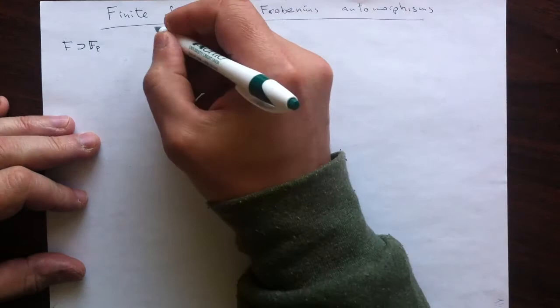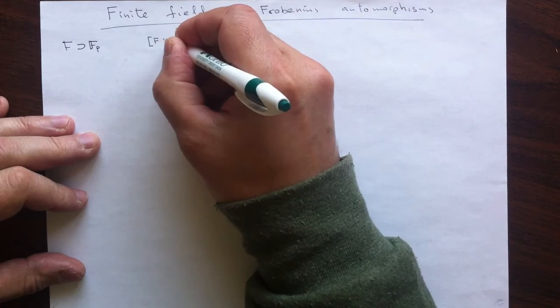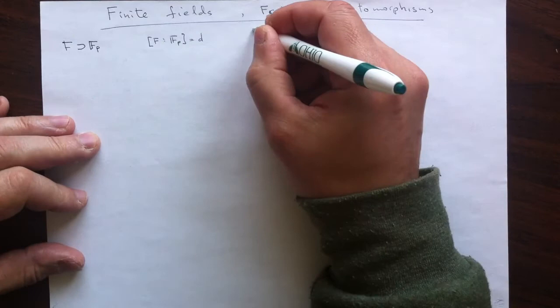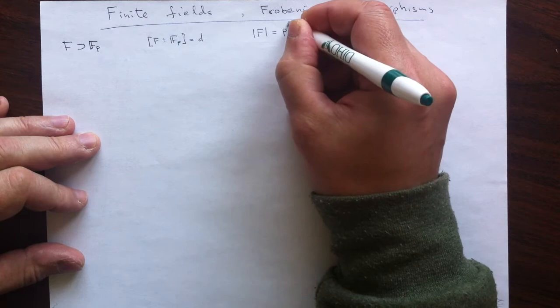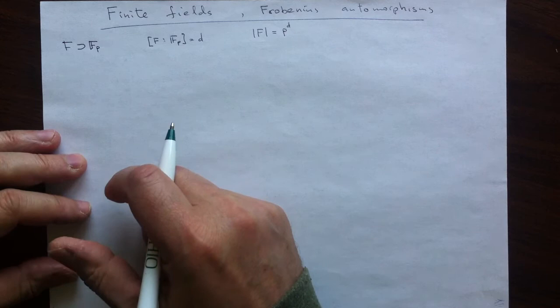And since it is finite, the degree is also finite. So let's fix it to be this number d. And that really makes the number of elements possible to compute. It will be the power of the characteristic, the dth power.